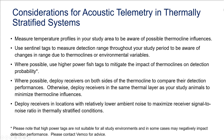We would like to give some recommendations for field applications. First, measure temperature profiles in your study area to be aware of possible thermocline influences. Second, use sentinel tags to measure detection range throughout your study period to be aware of changes in range due to thermoclines or other environmental variables. Where possible, use higher power fish tags to mitigate the impact of thermoclines on detection probability. Deploy receivers on both sides of the thermocline to compare their detection performances, or deploy receivers in the same thermal layer as your study animals to minimize thermocline influences. Finally, deploy receivers in locations with relatively low ambient noise to maximize receiver signal-to-noise ratio in thermally stratified conditions.